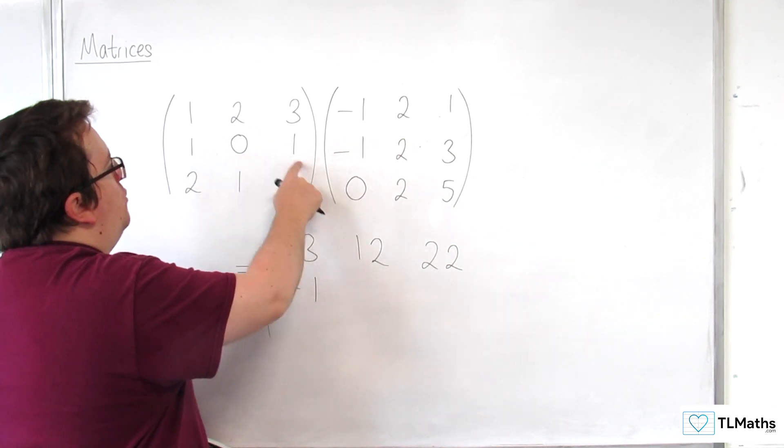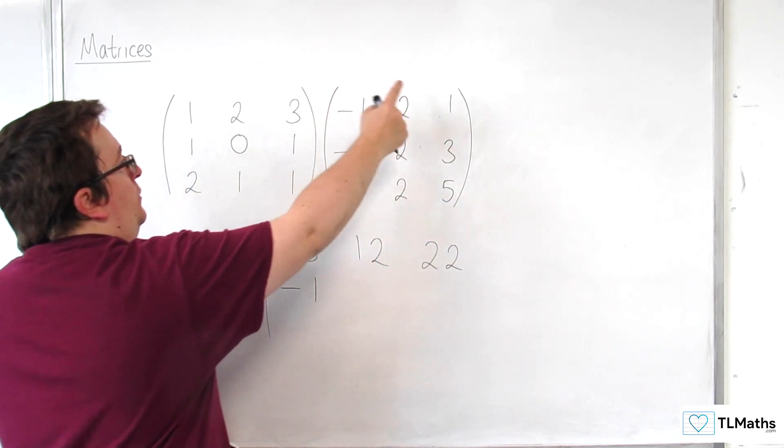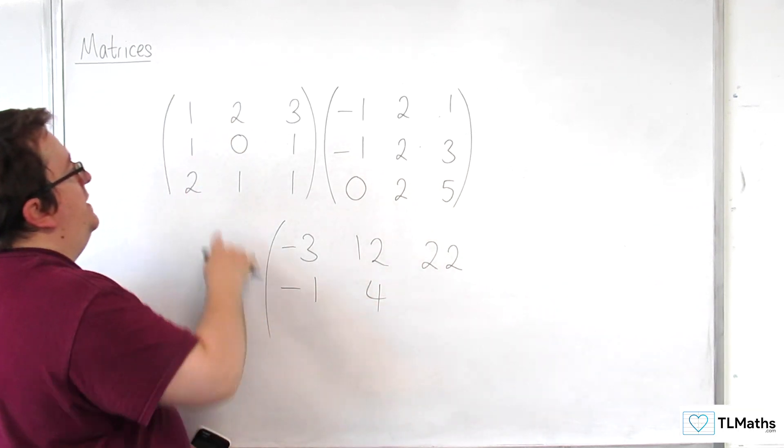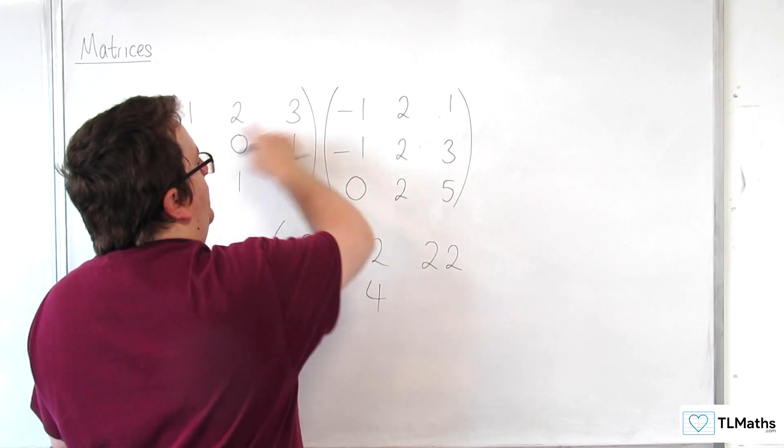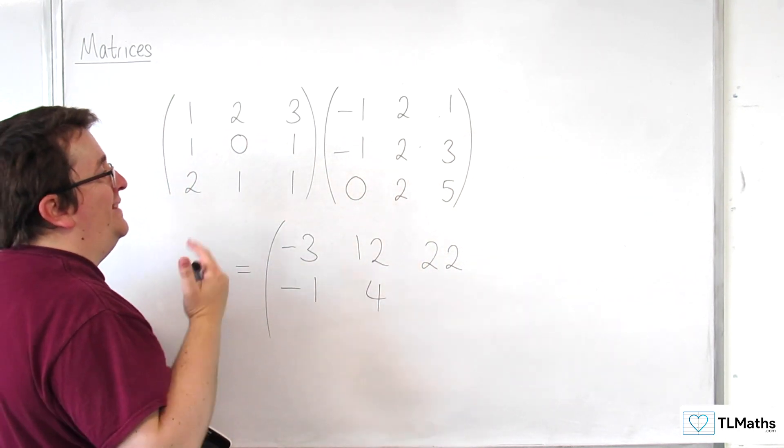Then, we've got 1, 0, 1, times by 2, 2, 2. And so, that's going to get us 2 plus 0, plus 2, which is 4. And then, we've got 1, 0, 1, times the 1, 3, 5. And so, that's 1 times 1, 0 times 3, 1 times 5, and so that's 6.